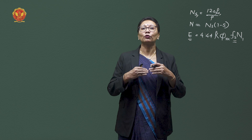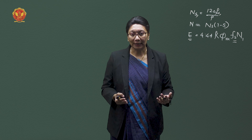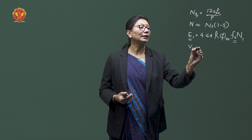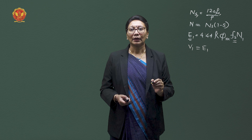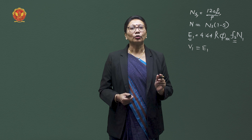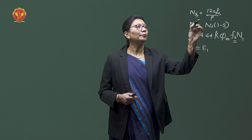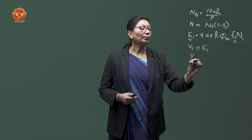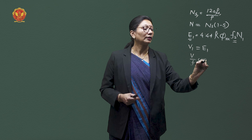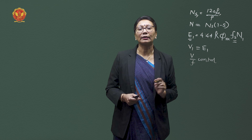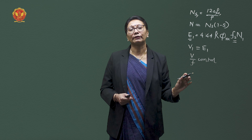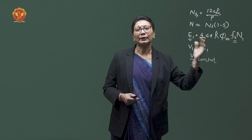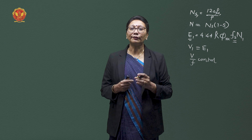If we neglect the stator voltage drop, then we can say V1 is approximately equal to E1. This way V by F control is possible, and we can understand that by varying stator voltage and frequency together, variation in speed can be achieved.